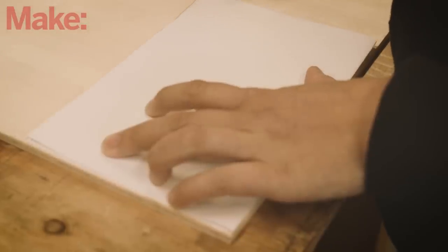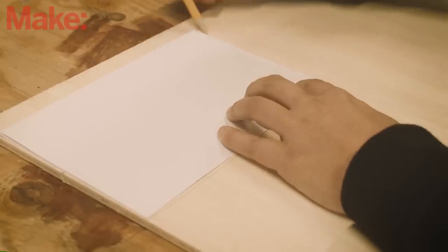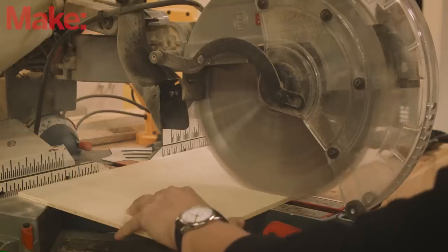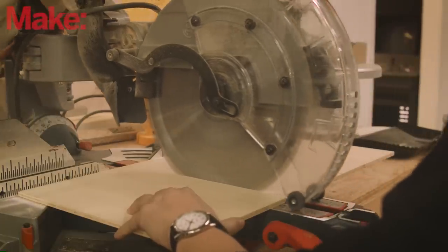Measure out your book size using a folded piece of standard paper. Trace the folded paper out two times on your material. I'm using a chop saw to cut out the covers of my book. Use sandpaper to smooth out the edges of the covers.